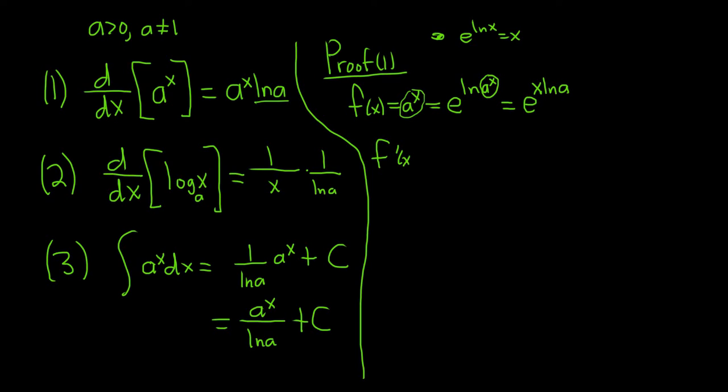So f prime of x. Well, the derivative of e to the x is e to the x. So here it's just e to the x ln a times the derivative of the inside. So we have to think about what the derivative of x ln a is. Well, ln a is a number. So the derivative of x ln a is just ln a. The derivative of x is 1, and the ln a is a constant, so it hangs out. Now we can bring the x back upstairs. So put the x back upstairs like this, and we have the ln a here. And these cancel. And so you end up with a to the x times ln a.